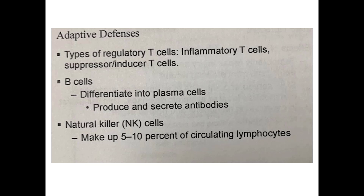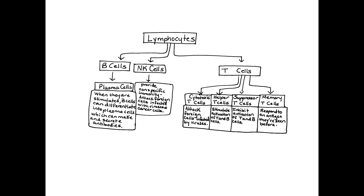B cells differentiate into plasma cells, which produce and secrete antibodies to fight antigens. Natural killer cells make up about 5 to 10 percent of circulating lymphocytes. So among lymphocytes we have T cells, NK cells, and B cells.